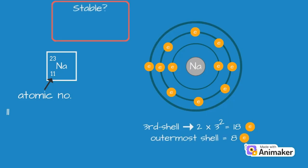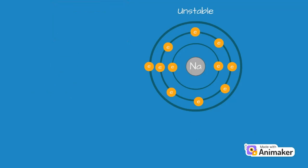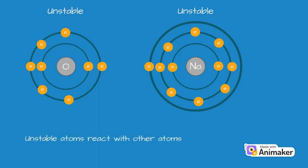In order for an atom to be stable, its outermost shell needs to be completely filled with 8 electrons. Since sodium has only 1 electron in its outermost shell, it's unstable. Similarly, oxygen has 6 electrons in its outermost shell, so it is also unstable. As such, they will want to react with other atoms so that they have a full outer shell.